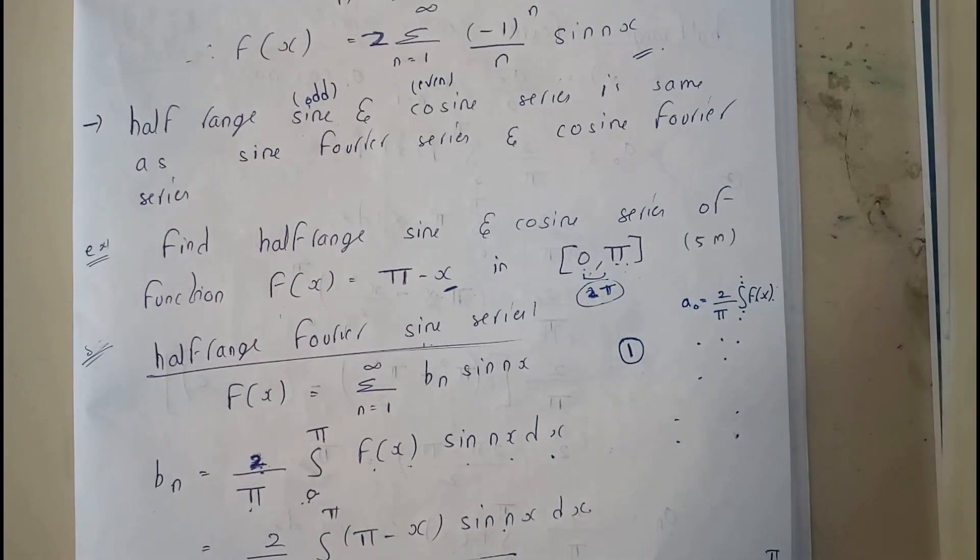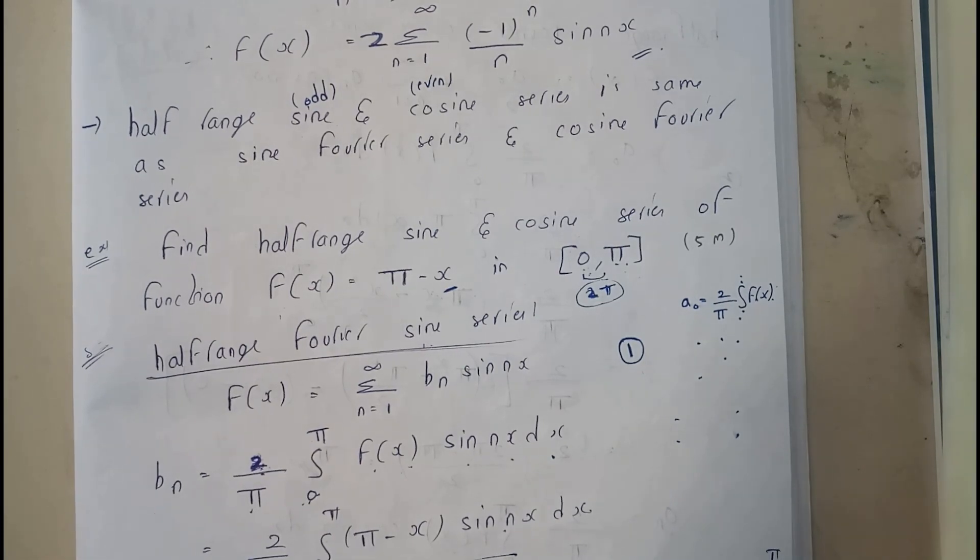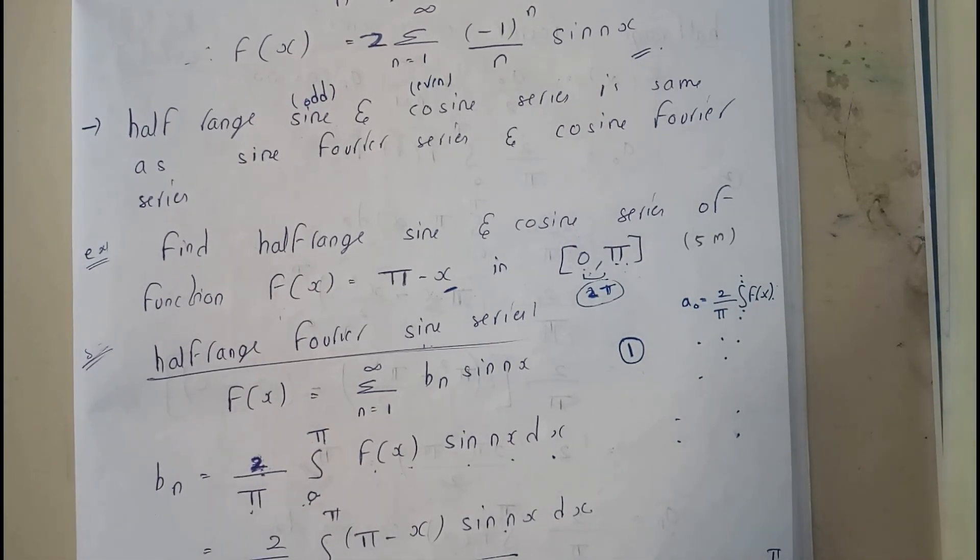Basically sine in odd and even functions is nothing but an odd function. Cosine is an even function. So that is what we do, but just the name changes to half range sine series and half range cosine series.